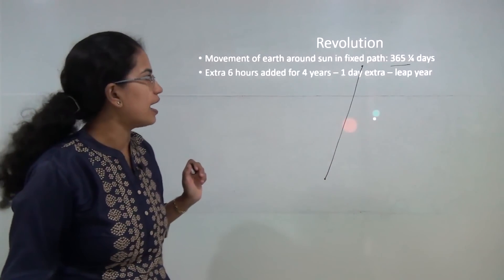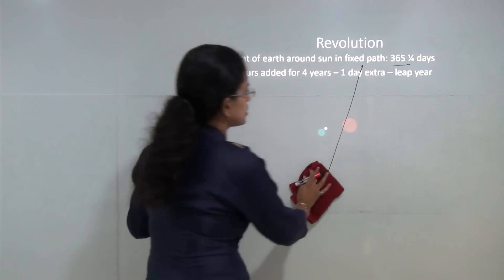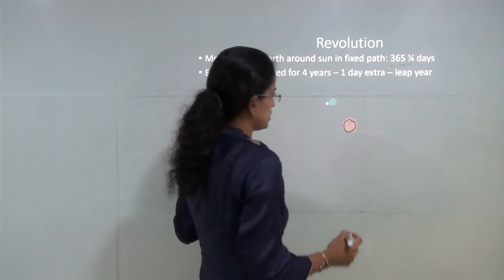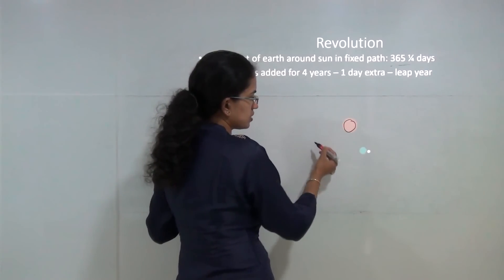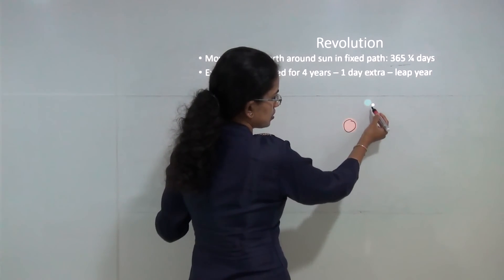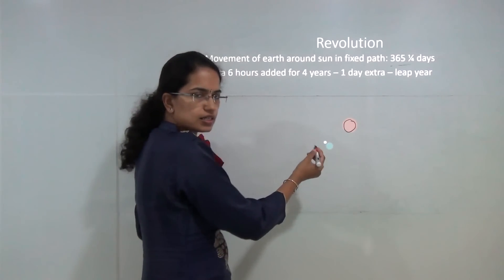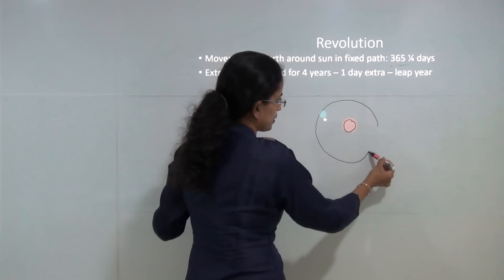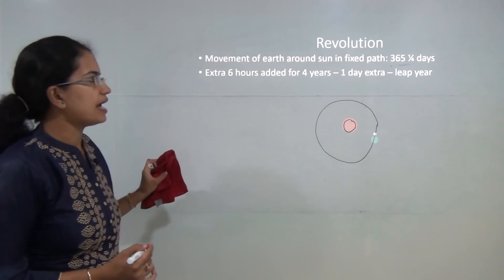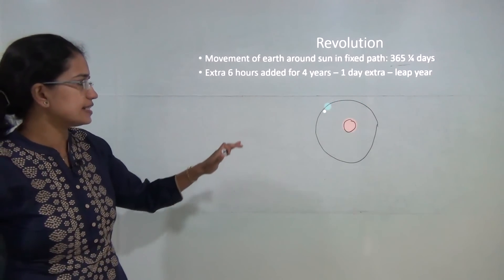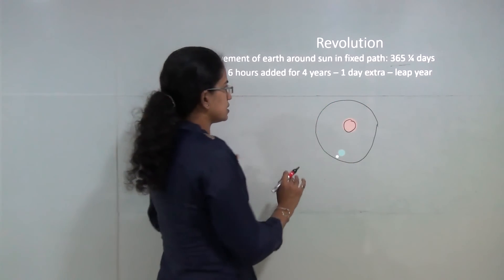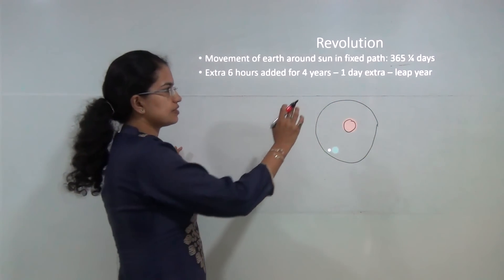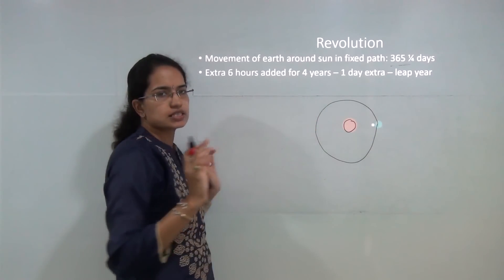Revolution is the movement of the earth around the sun. The sun is stationary and the earth moves around it. Around earth you have the moon paired with it. The earth moves in an elliptical path around the sun — that is known as revolution. Revolution causes seasons, and this fixed path takes 365 and one-quarter days to complete.